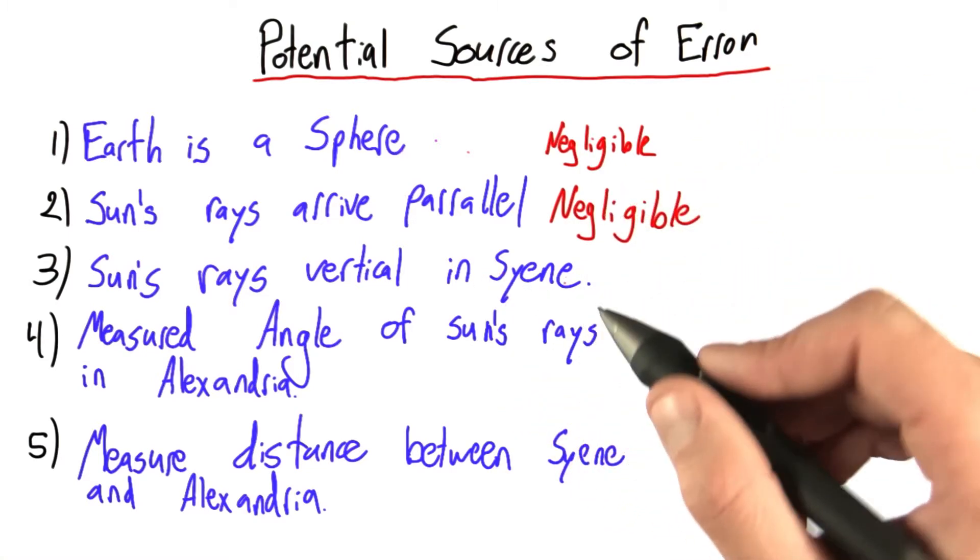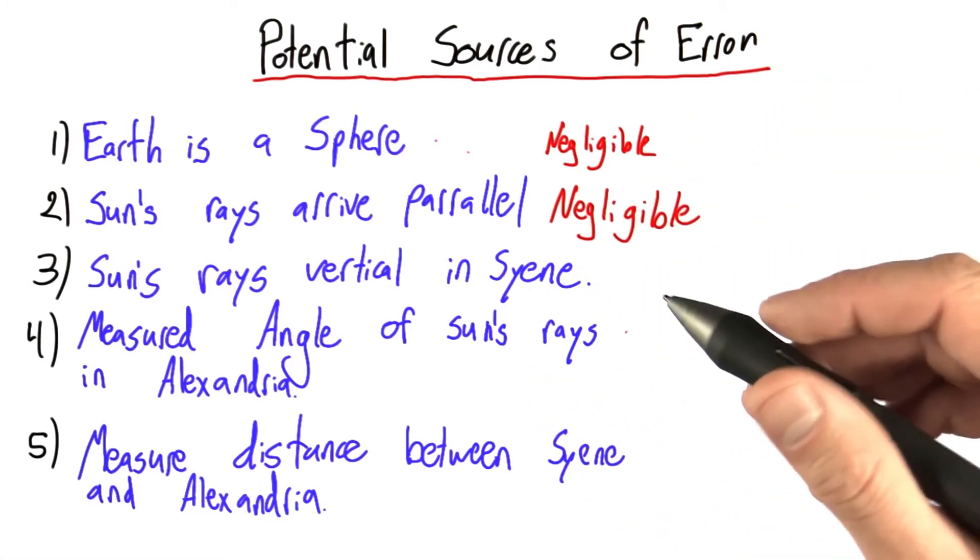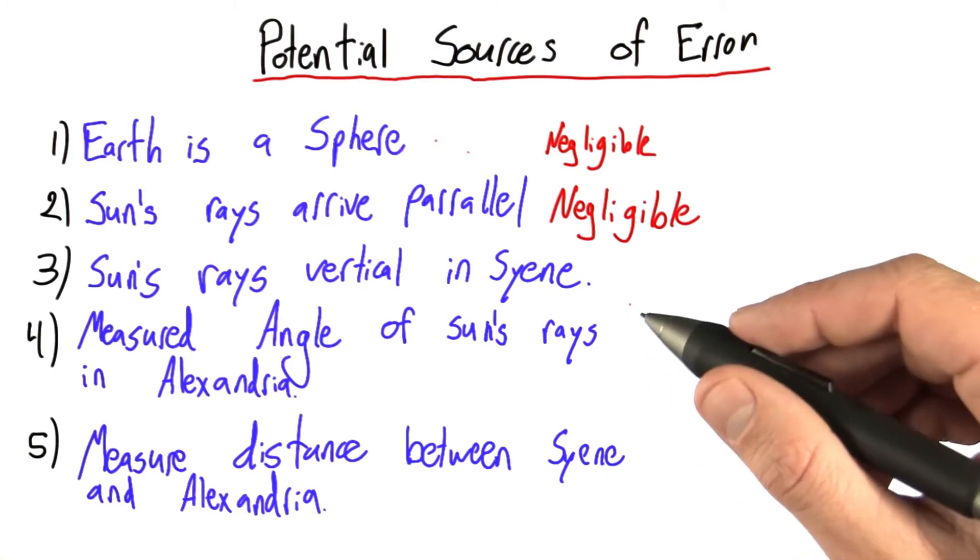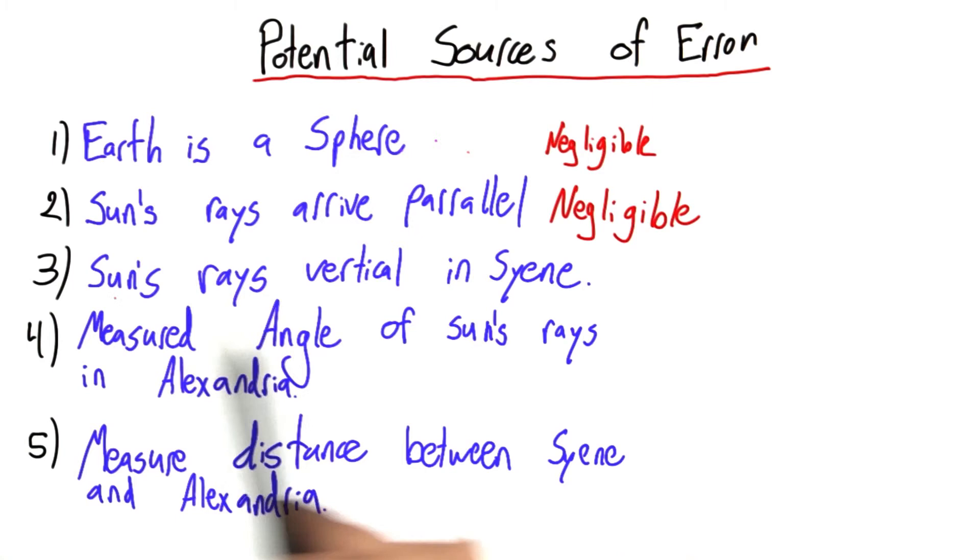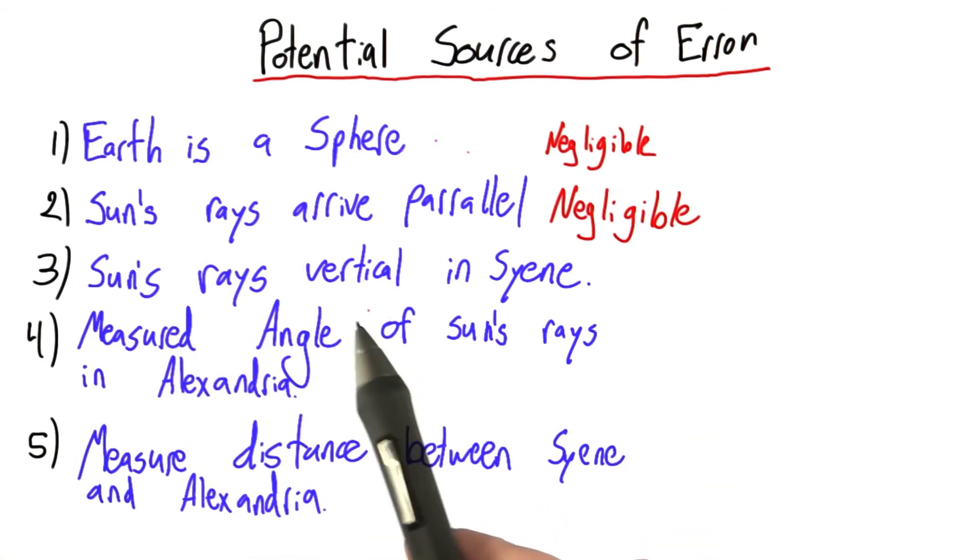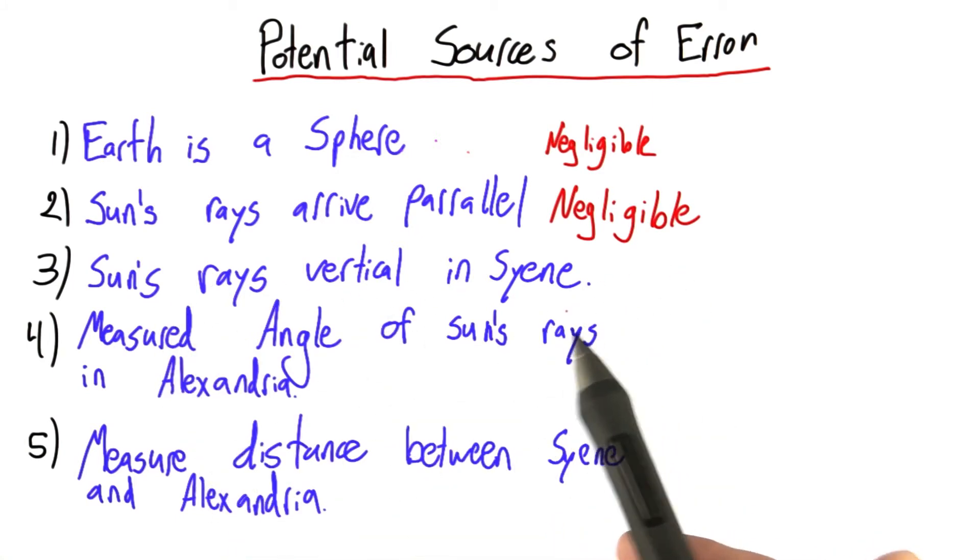Next, we have this idea that the sun's rays are arriving vertically in Syene. This seems like it could be a potential source of error. Let's think of how Eratosthenes came to this conclusion, that the sun's rays were perfectly vertical in Syene on the summer solstice.